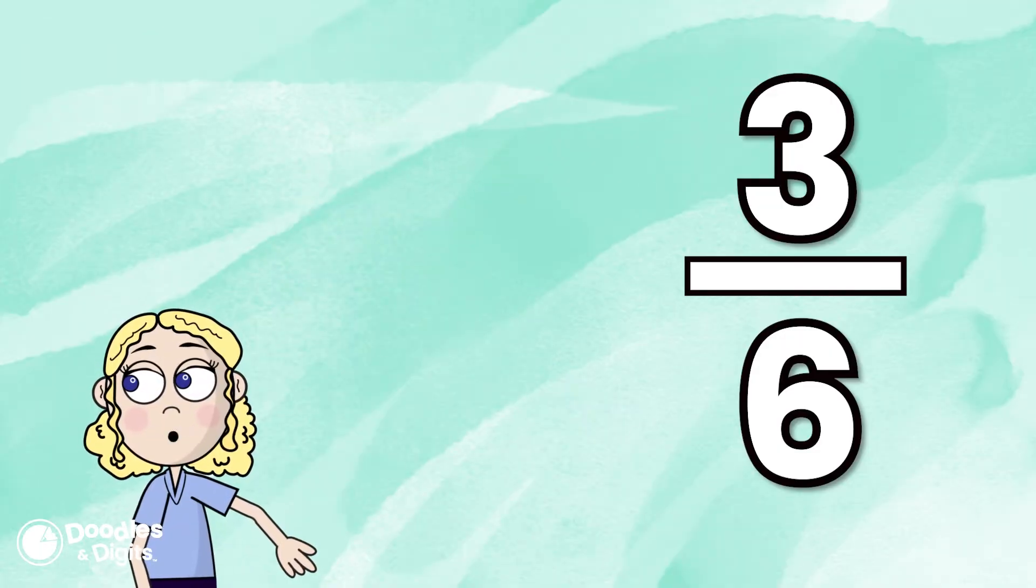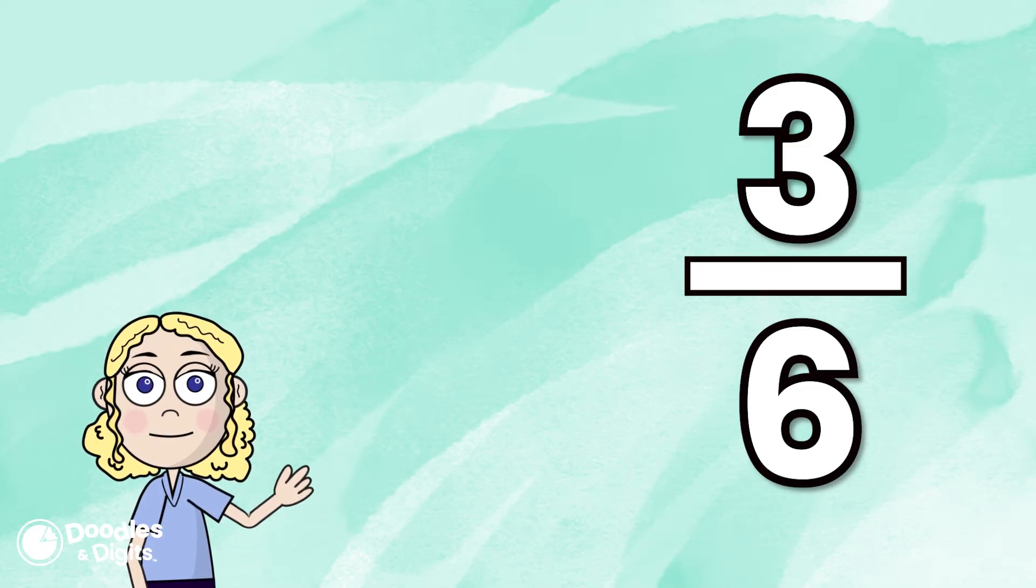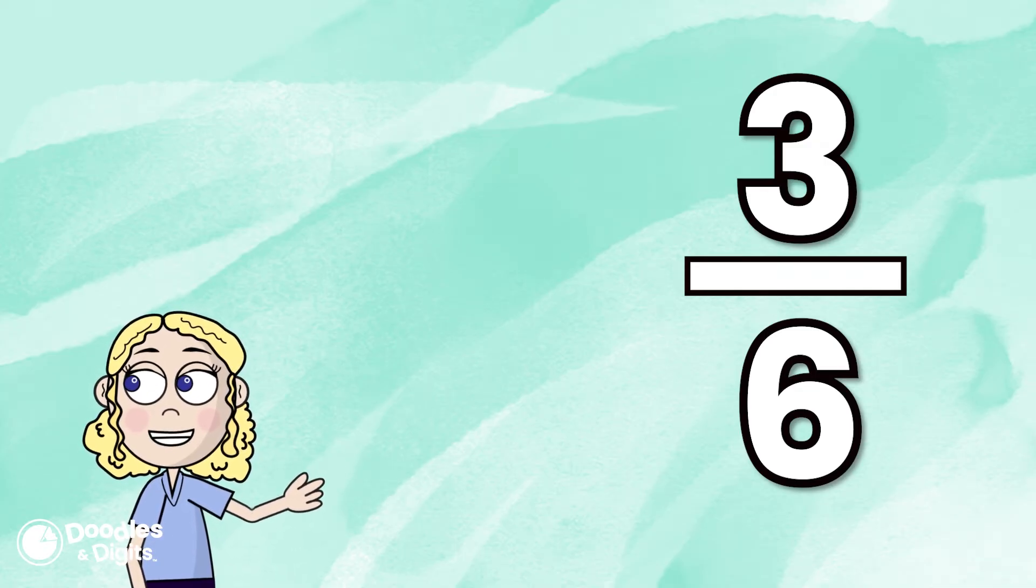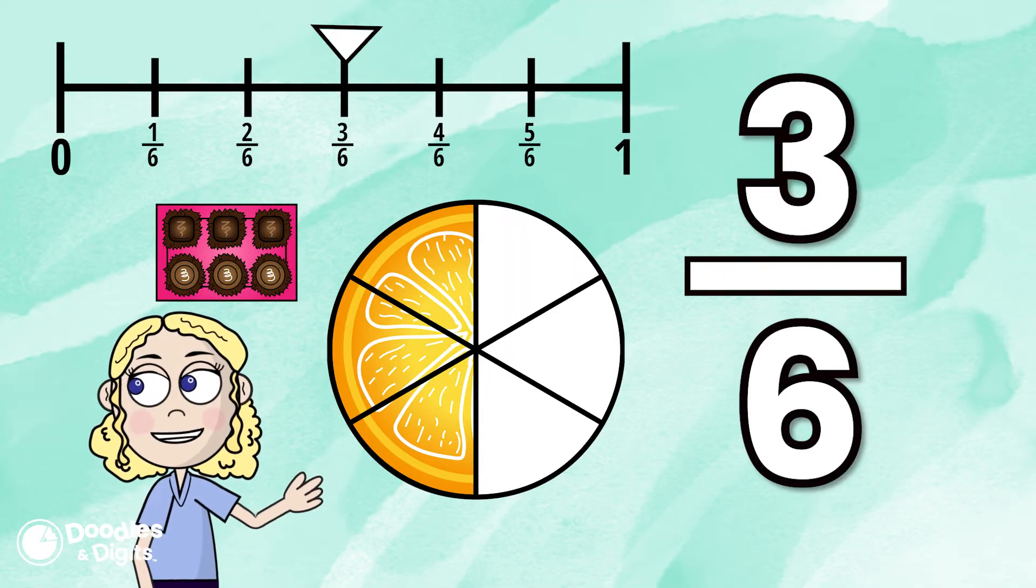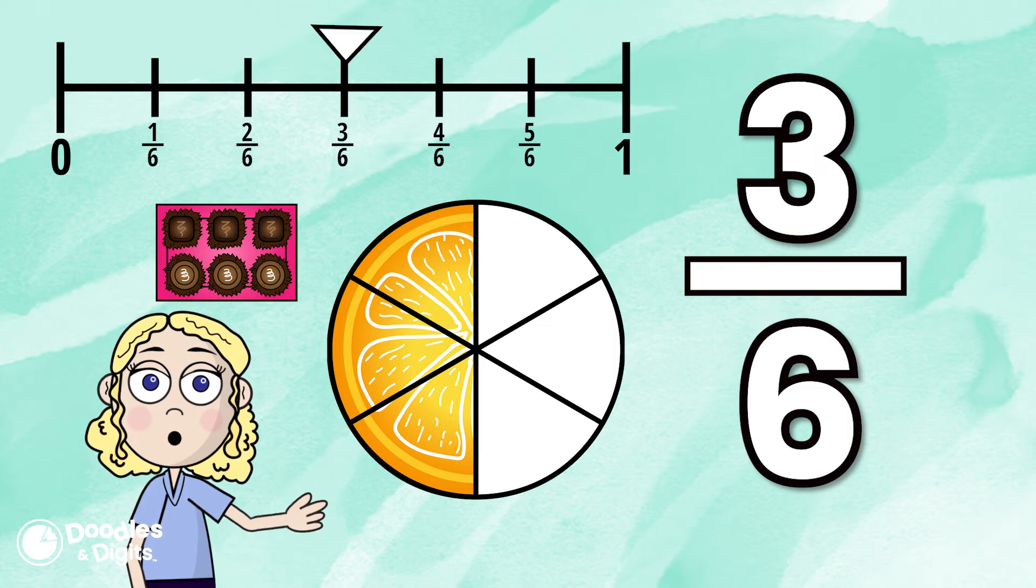So what is a numerator and denominator? Let's look at a fraction right here. Before we start, here's a couple different representations of this fraction. What do you notice? What do you think the numerator is and the denominator is?